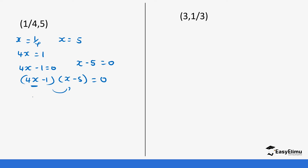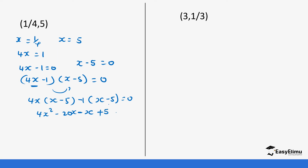We use this to multiply: 4x into bracket (x minus 5), then minus 1 into bracket (x minus 5), equals 0. This becomes 4x squared minus 20x, then minus x, then plus 5, equals 0. So this is 4x squared minus 21x plus 5 equals 0, and that is your answer.